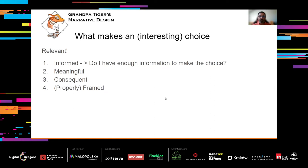Choices need to be informed, meaningful, consequent, and properly framed. Informed choices mean: does the player have enough information to make the choice? One early mistake for young writers is making mysterious choices — 'do you open the top drawer or the bottom drawer, go left or right?' — without any hint of what to expect after each option. It soon turns into pure random decision-making, which kills immersion. Players will just save, move forward, reload, and try the other direction. To be relevant, a choice needs to be informed — the player needs to know, or at least have some idea, of what to expect.